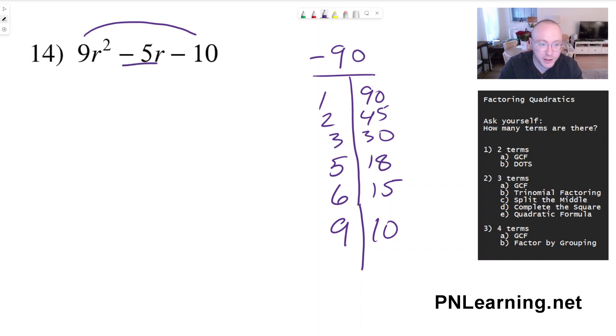So let's see, can any of these have a difference of 5? With this particular example, we just don't have the factors, and in this case, we would just say this is not factorable.